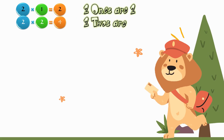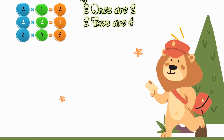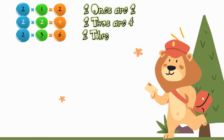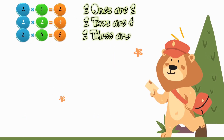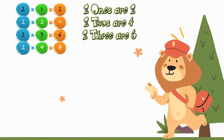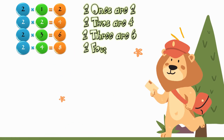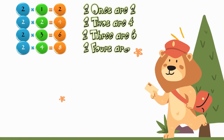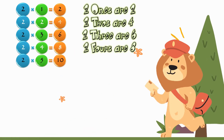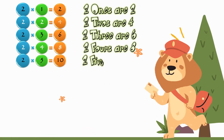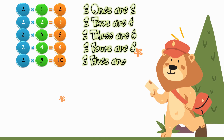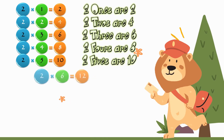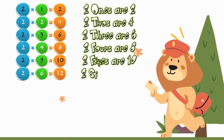Two ones are two. Two twos are four. Two threes are six. Two fours are eight. Two fives are ten.